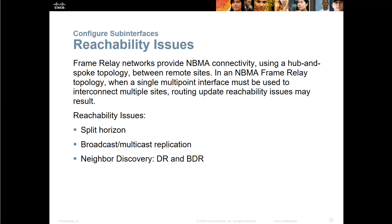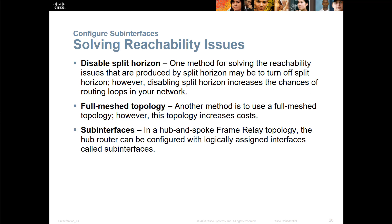Let's talk about reachability issues. Keep in mind that frame relay uses NBMA-type connectivity, which is the hub-and-spoke topology between remote locations. Within the frame relay topology, when a single multipoint interface must be used to interconnect multiple sites, routing update reachability issues can result. The main three issues are split horizon, understanding how packets must flow, broadcast and unicast replication, and neighbor discovery — dealing with things like the designated router and backup designated router as it relates to OSPF.